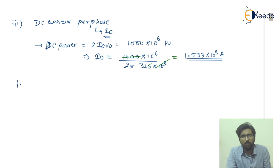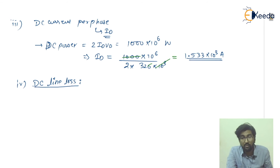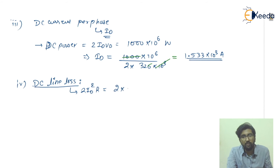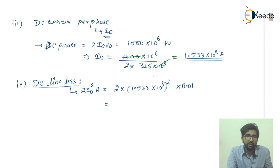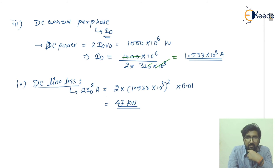Now we find the DC line loss. DC line loss equals 2 into I_D squared into R, that is 2 into (1.533 into 10 to the power 3) squared into 0.01. After simplification, the DC line loss comes out to be 47.7 kilowatt of power lost in the DC line. I hope you have understood this numerical — thank you.